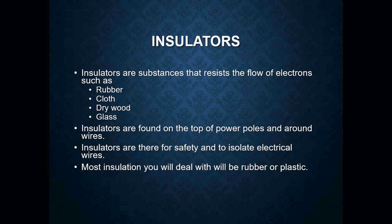Insulators, on the other hand, are substances that resist the flow of electrons. That could be rubber, cloth, dry wood, or glass, just to name a few. Insulators are found on the top of power poles and around wires. When you look at an electrical wire, you'll see there's a coating on there, but if you strip that coating off, you'll see there's a copper wire in the center. We have the insulator around the wire so that it protects us and prevents the electricity from shorting out or making contact with anything it's not supposed to.